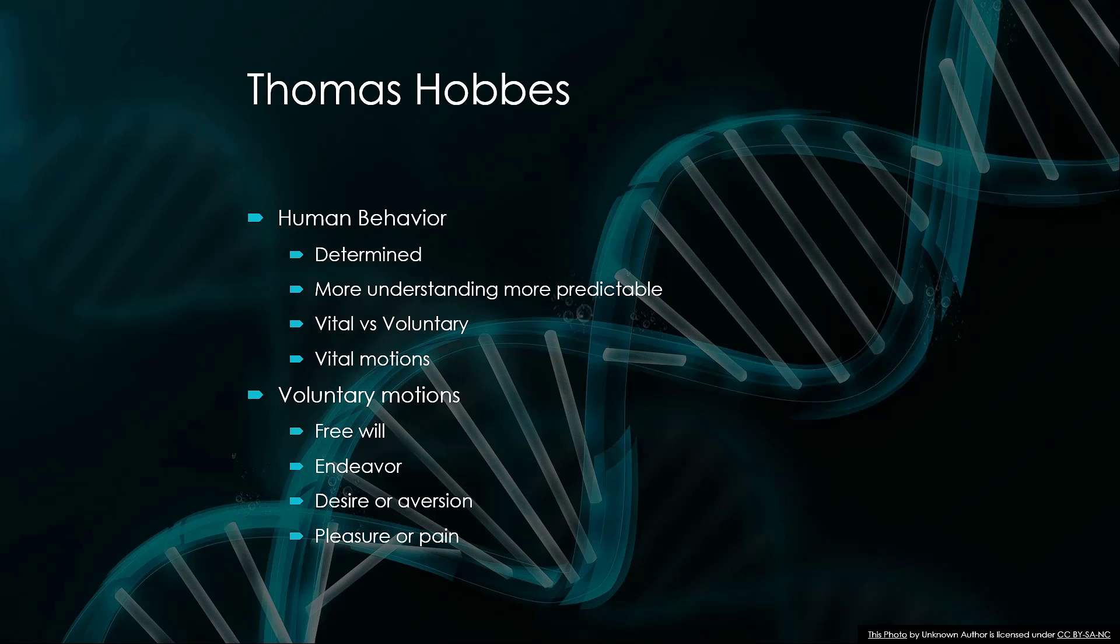Now, he holds, because he believes we're determined, that the more we understand the laws that govern our behavior, the more predictable our behavior will be. Now, we may never be able to achieve perfect predictions because we'll always presumably have imperfect knowledge. But the idea is that the more we understand the laws governing us, the more accurate our predictions will be.